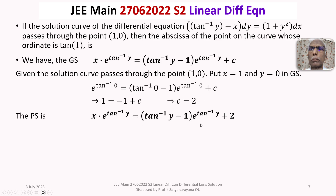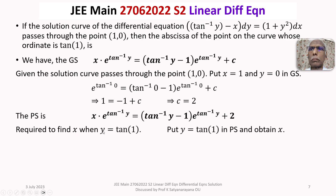Substituting c equals 2 into the general solution gives the particular solution curve. Now we find the abscissa, meaning the x-coordinate, of the point on this curve whose ordinate is tan(1), that is, where y equals tan(1). We put y equals tan(1) into the particular solution and solve for x.